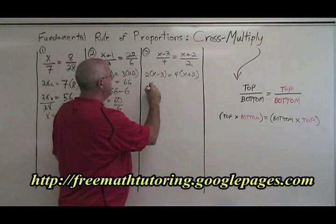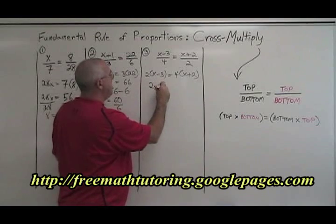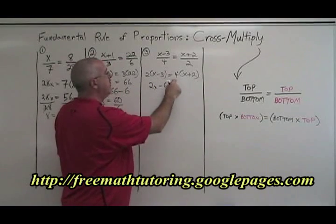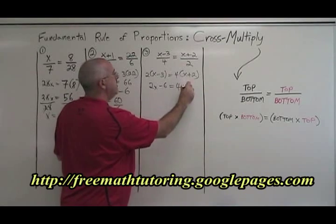Multiplying. 2 times x, 2x. 2 times negative 3, negative 6 equals 4 times x, 4x. 4 times 2, 8.